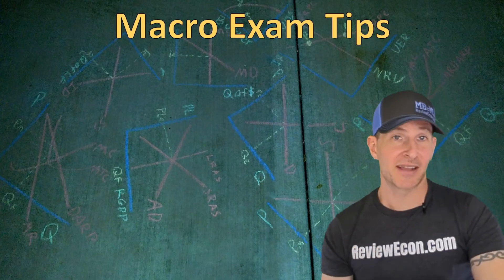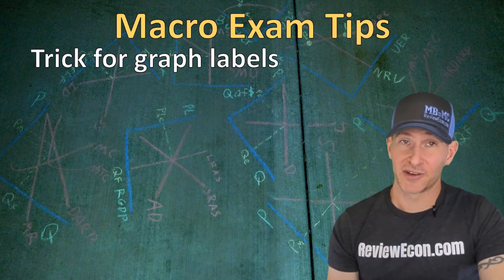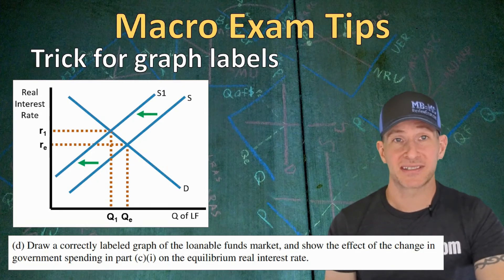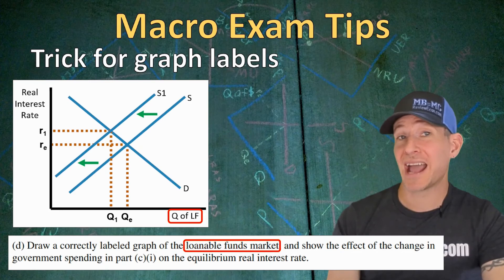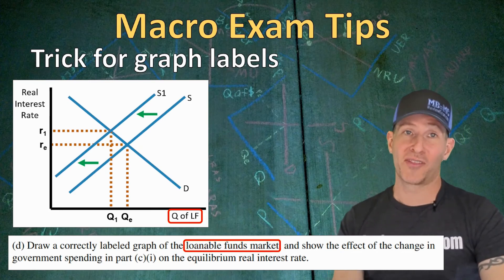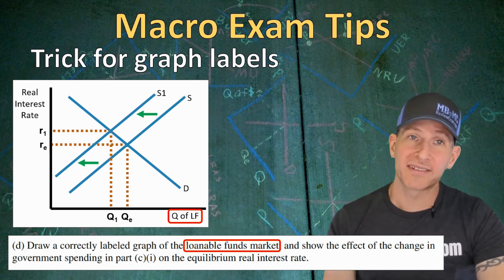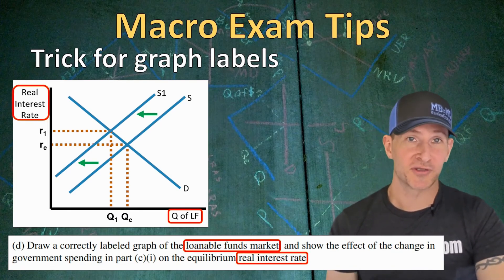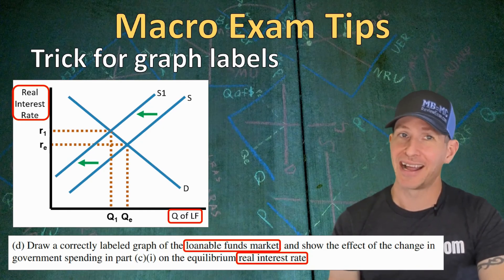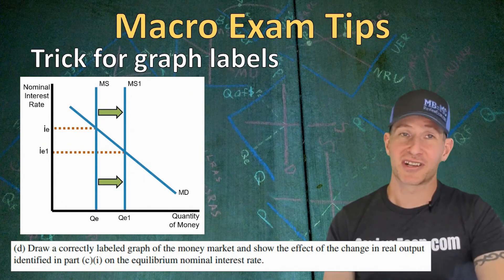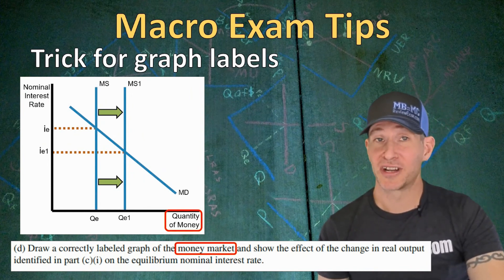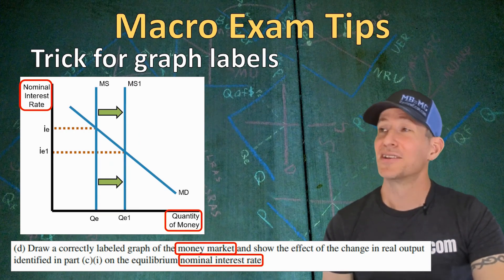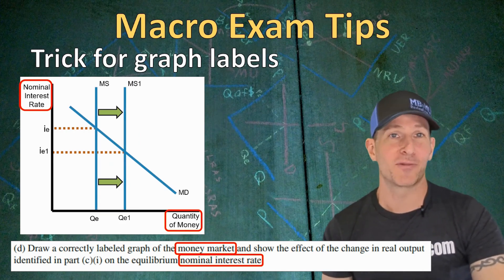Finally, some macroeconomics-specific tips. Here's a trick for remembering labels on different graphs: if you're not sure how to label a graph, look for clues in the question itself. For a loanable funds market, the x-axis will be the quantity of loanable funds, and if the question asks about the impact on the real interest rate, that goes on the y-axis. Similarly, for a money market graph, the x-axis is the quantity of money, and if the question asks about the impact on the nominal interest rate, that goes on the y-axis.